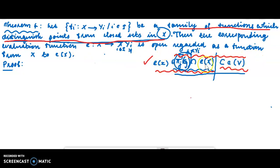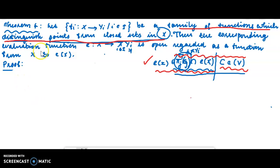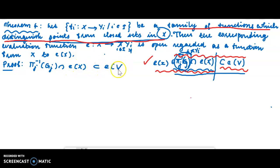V is a neighborhood of each of its points. We have to prove that the result is equal to E of X. If we choose X element of pi_j inverse of G_j intersection, then pi_j inverse of G_j intersection E of X is a subset of E of V, and the proof proceeds from there.